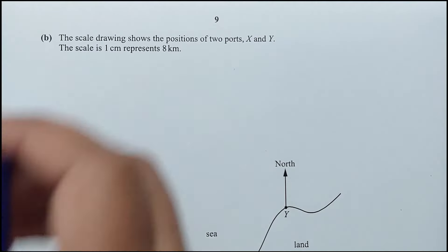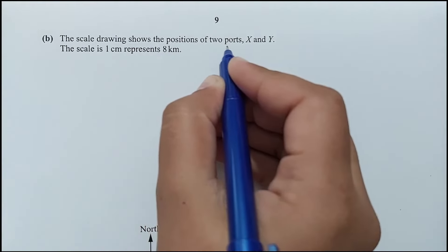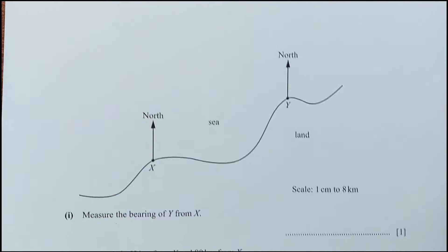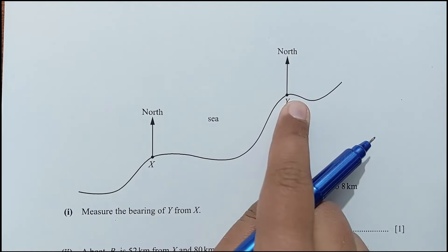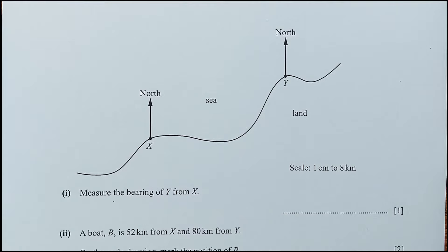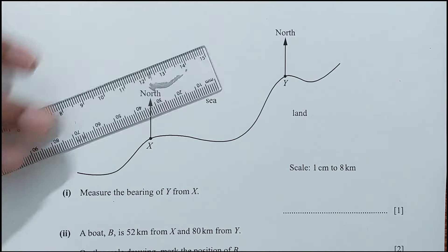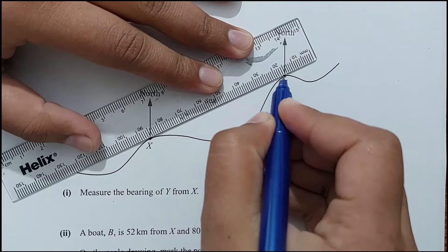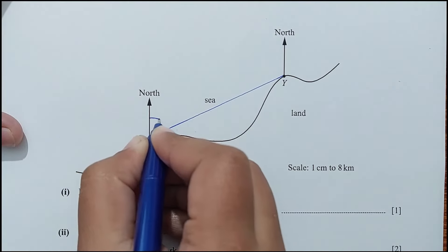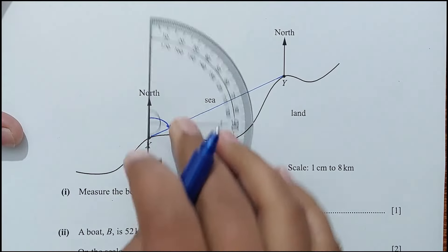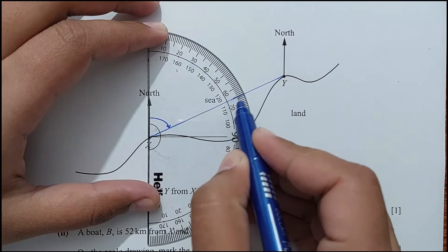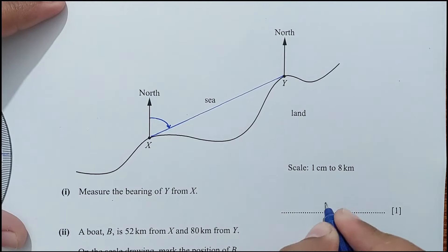For part B, a scale drawing shows ports X and Y. Scale: 1 cm represents 8 km. Part 1: measure the bearing of Y from X. Drawing a line from X to Y and measuring clockwise from north gives a bearing of 065°.